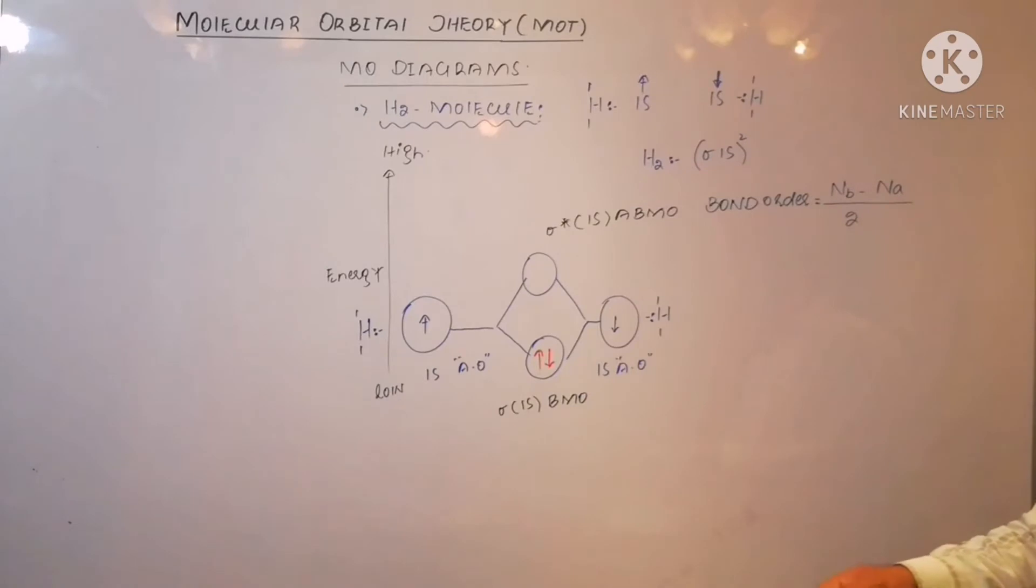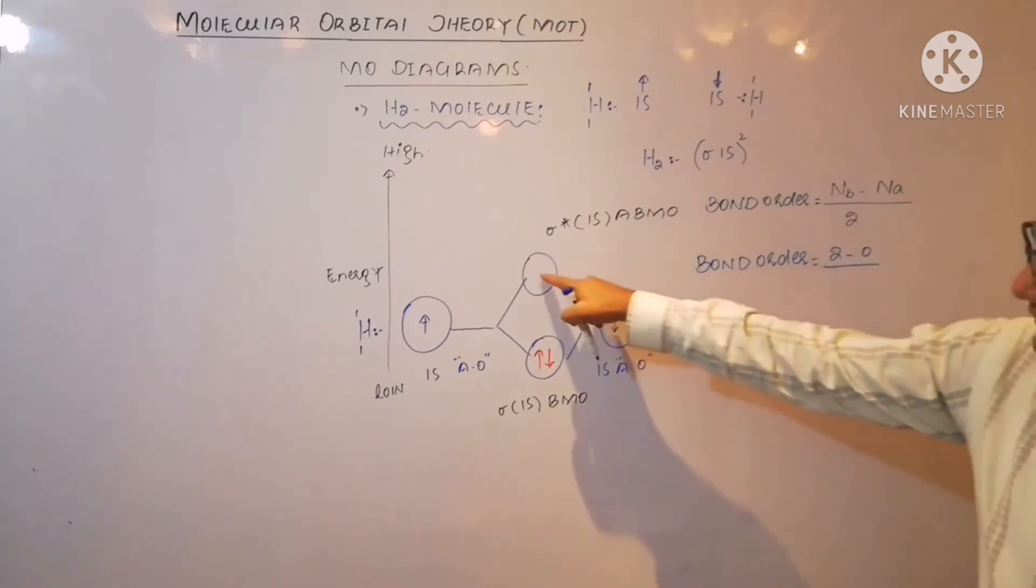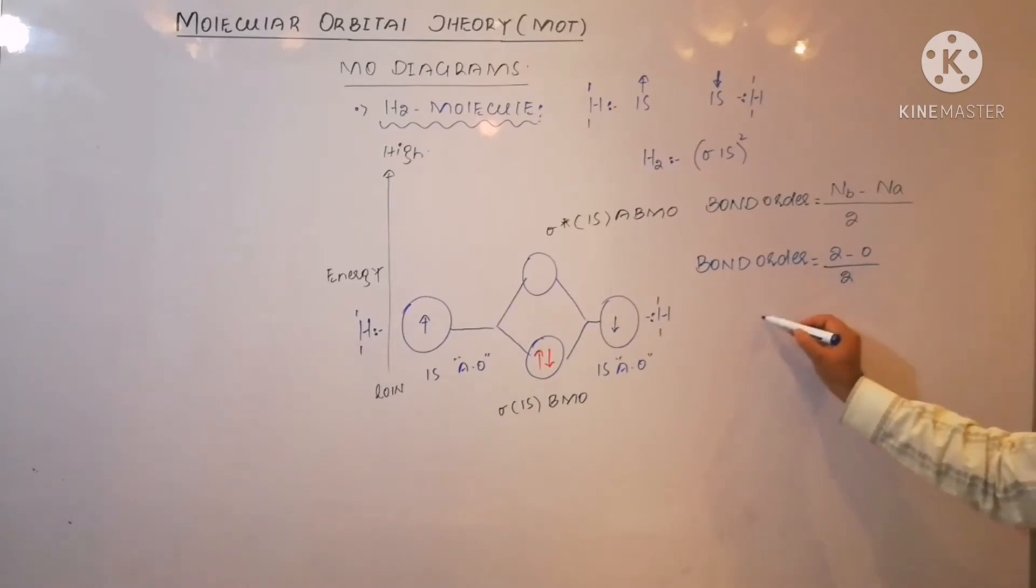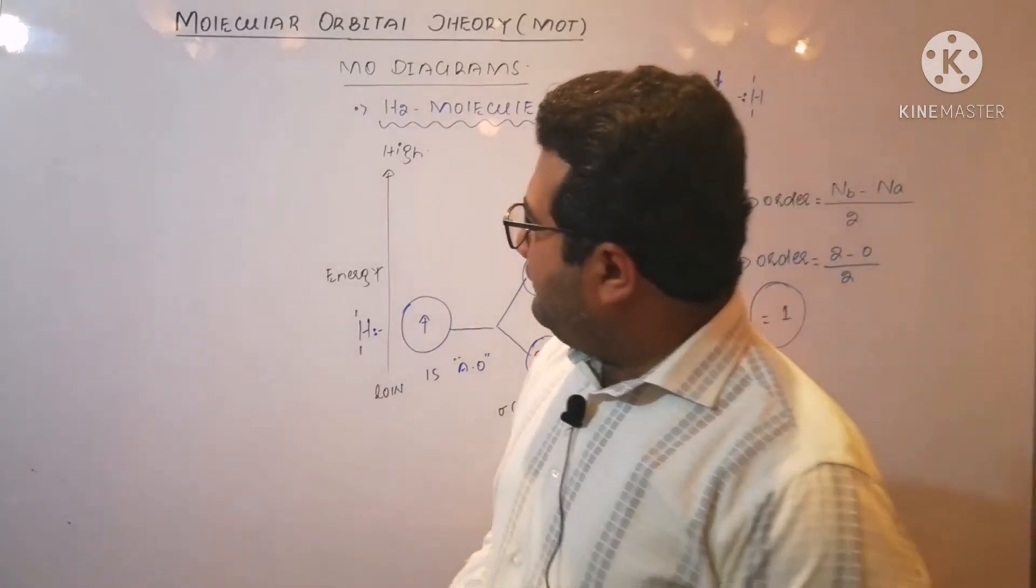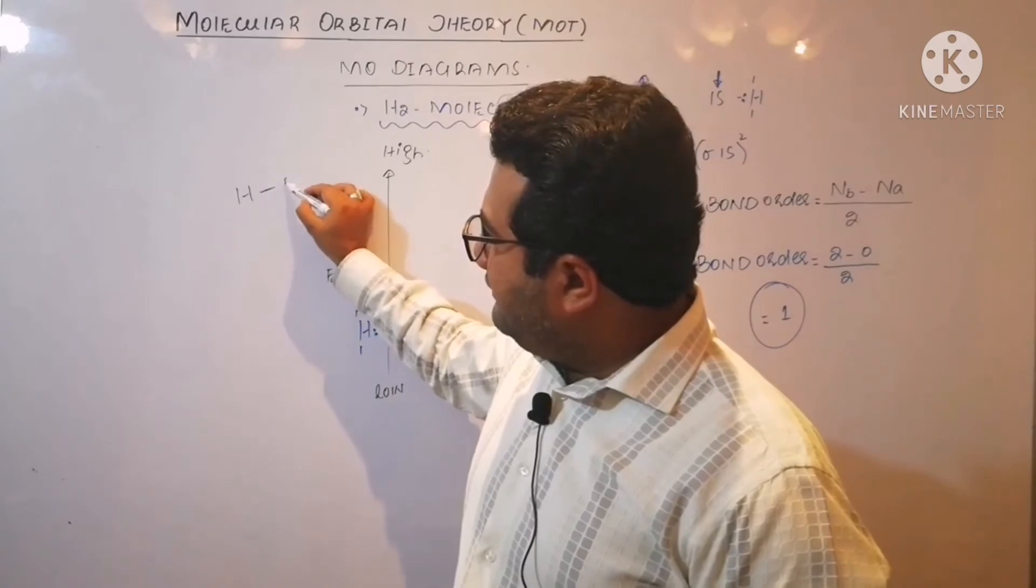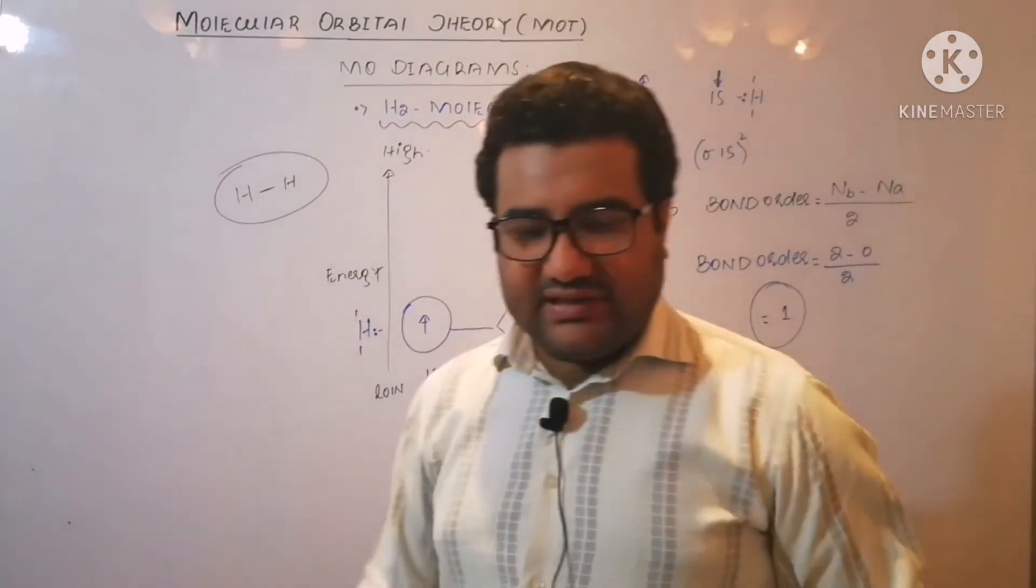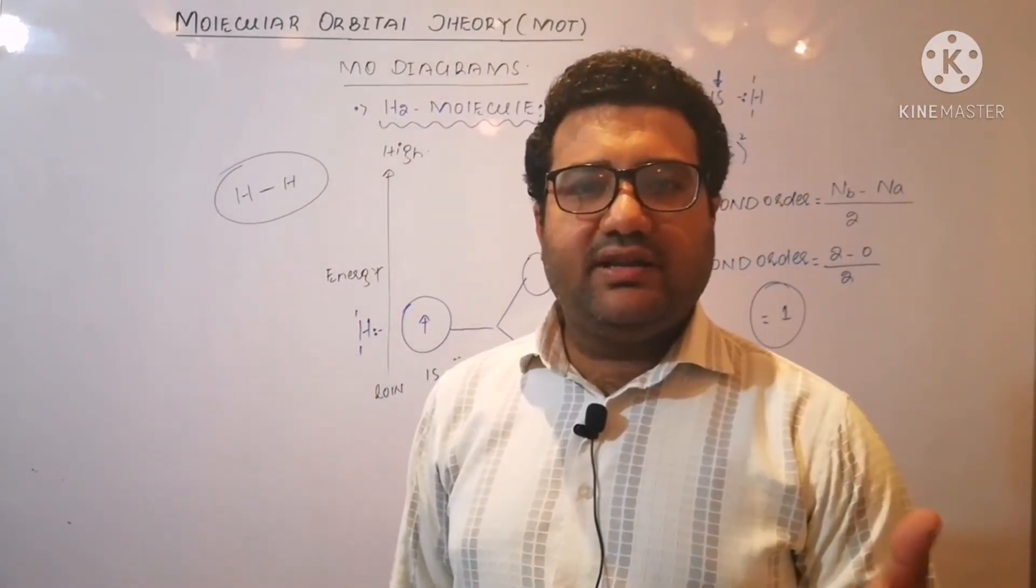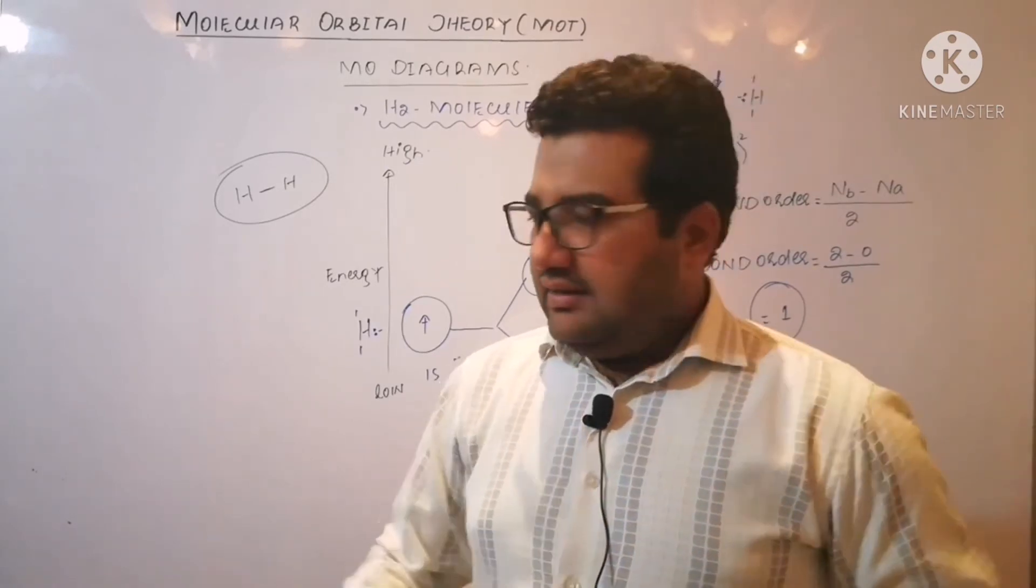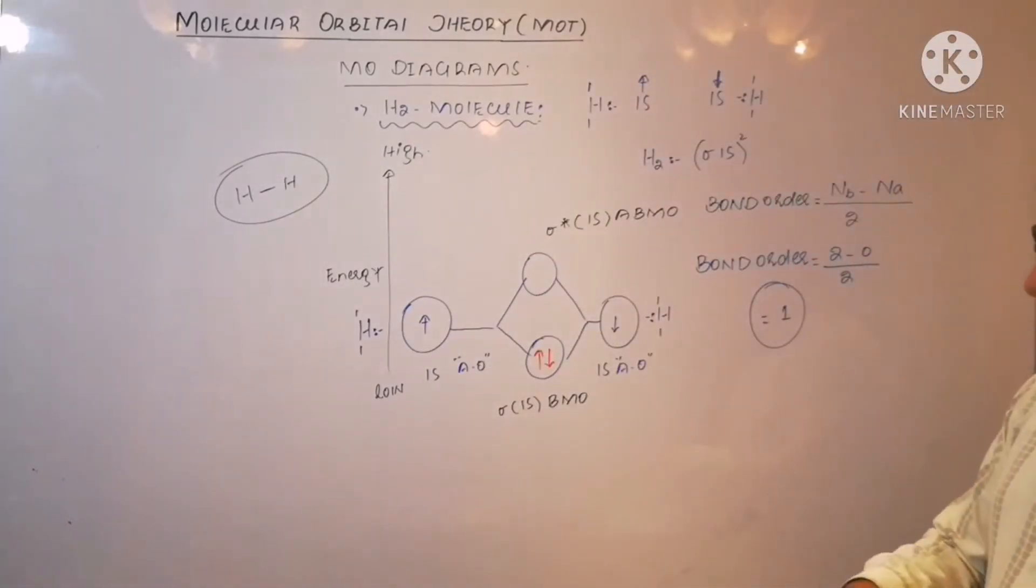Let us calculate the bond order of the hydrogen. The bond order is equal to the number of electrons in bonding molecular orbital, which is 2, minus 0 because this one is empty, divided by 2. So the answer will be 1. The bond order of hydrogen is 1. It simply means that between two hydrogen atoms there will be a single bond. And to calculate this bond order is very important because this bond order will provide information about the bond energy, also about the bond length, and some other criteria.